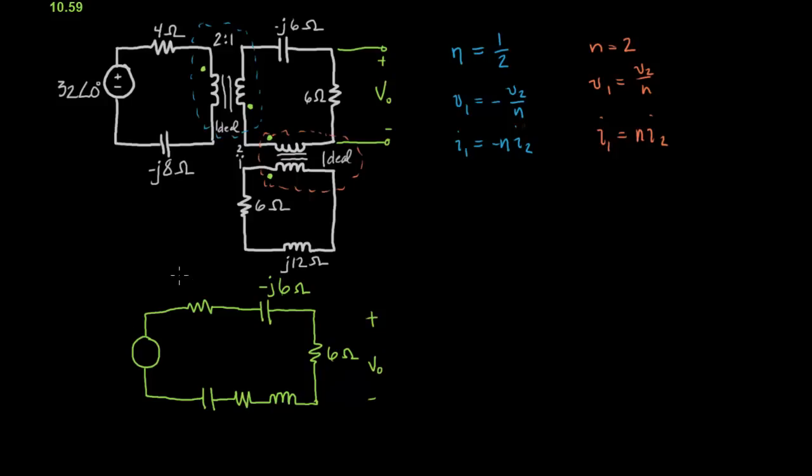And we'll start over here on the left. So we want to know, we have the voltage on the left, and we want to know what would the voltage on the right be. So we use our equations here. We know this one, and we want to figure out the one on the right. So what we'll do is we'll take the, we'll multiply this side by negative N. Okay, so we get for our V2 equals negative N, and we'll just plug in numbers here actually. Negative N, which is negative one half, times 32 angle zero.